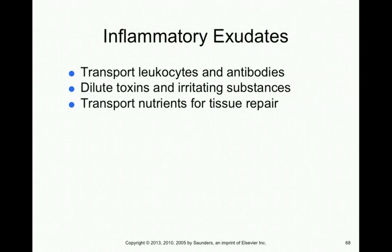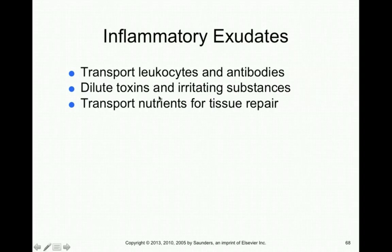The fluid coming from increased vascular permeability is called inflammatory exudate. Inflammatory exudate involves the transport of leukocytes and antibodies from blood into tissue, helps dilute toxins and irrigating substances, and transports nutrients into the inflamed tissue for repair. Cytokines and chemokines are what increase the permeability of blood vessels to produce this exudate.